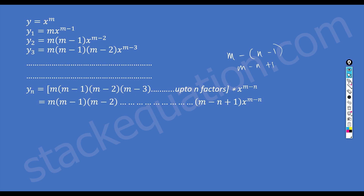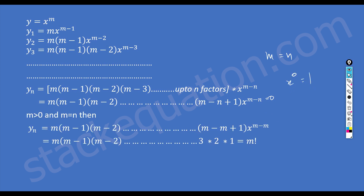Now if m equals n, then the exponent part becomes 0, and x to the power 0 is 1. So we are left with only a number: m factorial. When m and n are both equal, solving this part gives 3·2·1.